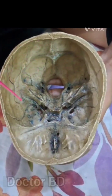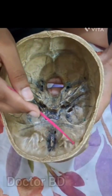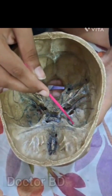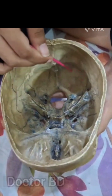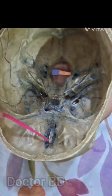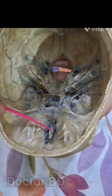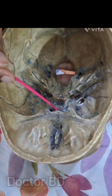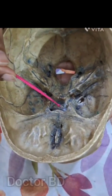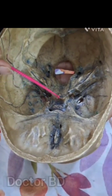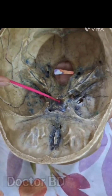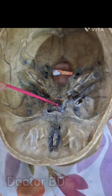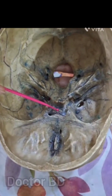This is the base of the skull. This is the anterior cranial fossa, middle cranial fossa, and posterior cranial fossa. This is the ethmoidal spine. This is the sulcus chiasmaticus, tuberculum sella, dorsum sella, and in between there is a depressed area which is known as the hypophyseal fossa or pituitary fossa.